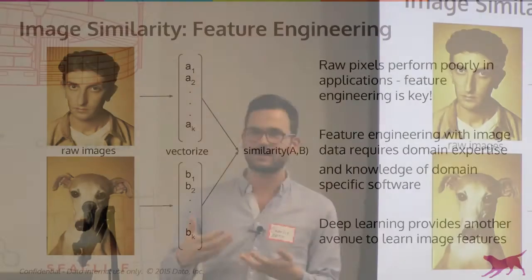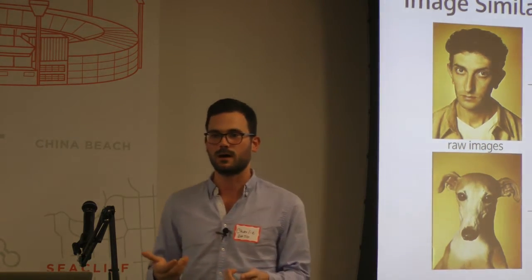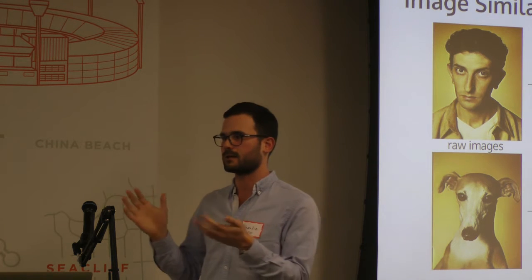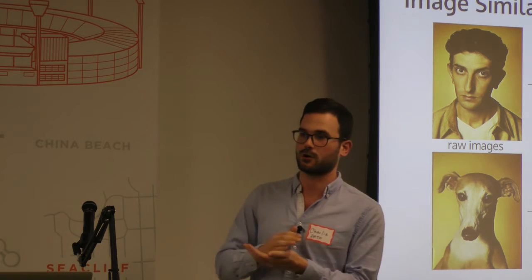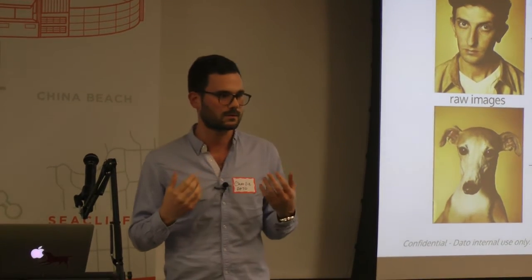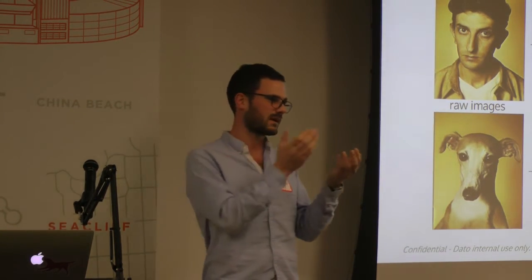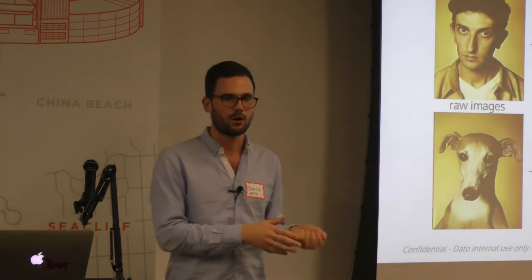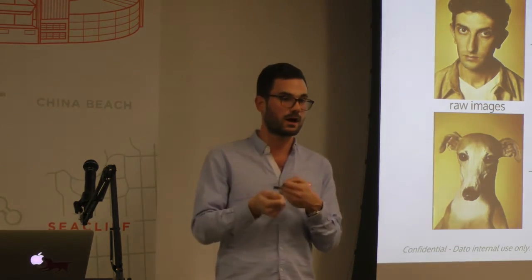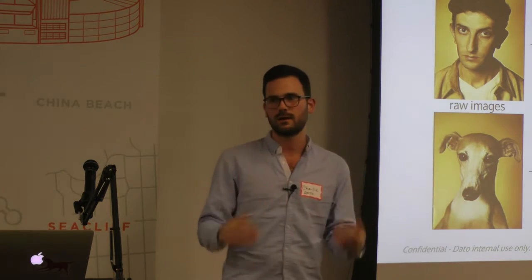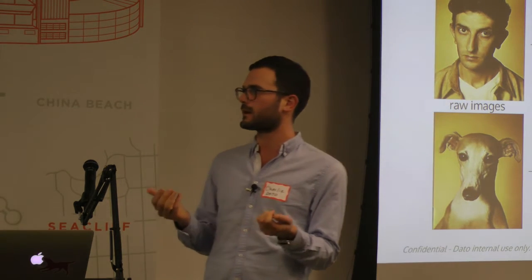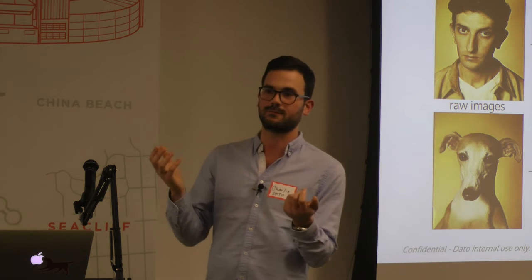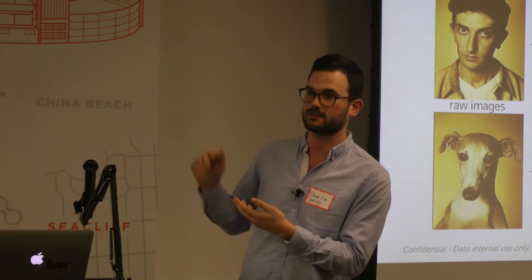Feature engineering in images is actually a hard thing to do. It requires a lot of domain-specific knowledge. In the Python world, people love scikit-learn, but for images you have to switch to scikit-image, which is somewhat underdeveloped. You could go to OpenCV, but that requires a lot more knowledge and is much less intuitive. This is where deep learning, with the advances in computer vision, has brought some new promising advances that lend themselves to this type of problem.